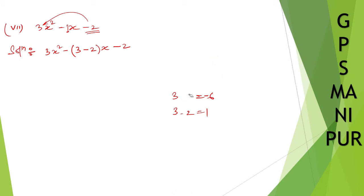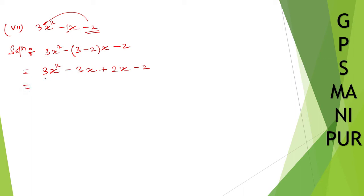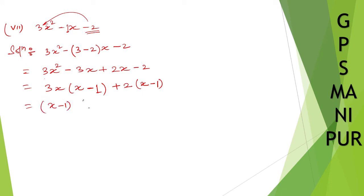Let me rough this one and now let us solve. 3x squared minus 3x plus 2x minus 2. From the first two, take 3x common. Taking 3x common, x remains here, 3x goes out so 1 remains. Plus, from these two, take 2 common. So x minus 1 goes out, so 1 remains. Take x minus 1 common. x minus 1 you are taking common out, and 3x plus 2 remains. So the answer is x minus 1 times 3x plus 2.